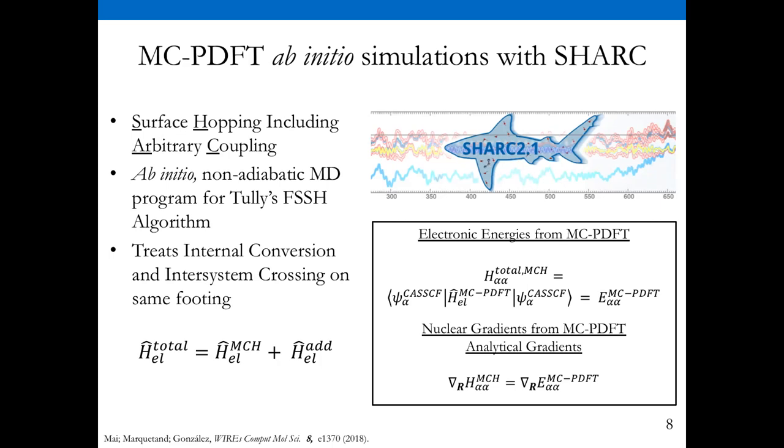One advantage of SHARC is it treats internal conversion and intersystem crossing on the same footing by using this total Hamiltonian, which is the molecular Coulomb Hamiltonian with additional features. It can use spin-orbit coupling to treat intersystem crossing, or dipole moments to treat light-matter interactions. We've implemented this in SHARC and wanted to test it.